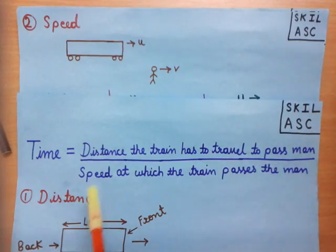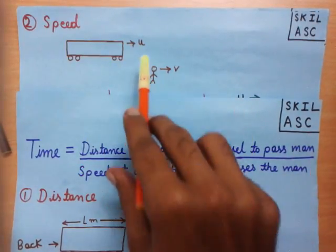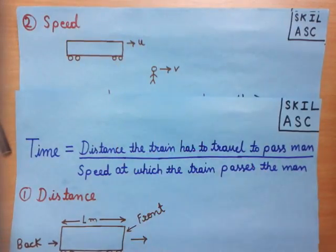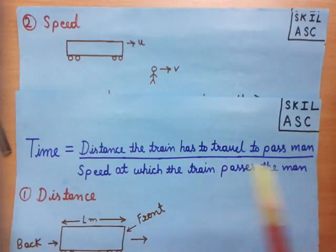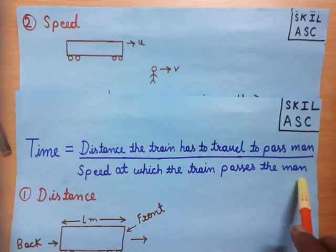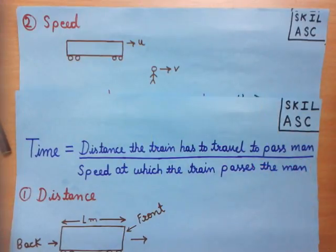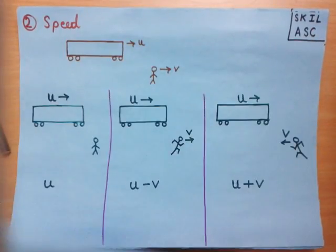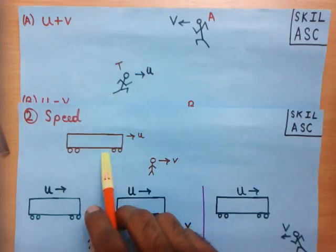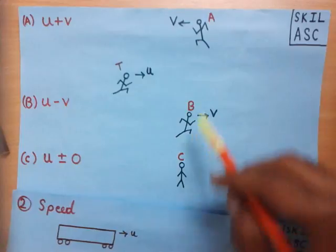Now we see how to find the speed at which the train passes the man. Suppose both the person and the train are moving in the right direction, where U is the speed of the train and V is the speed of the person. The speed at which the train passes the man is different from U — it depends on both U and V. To understand this, consider an example where we represent the train by person T, and the man by three different persons called A, B, and C.